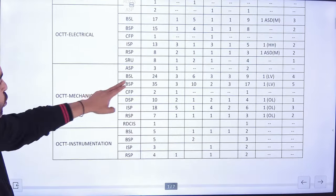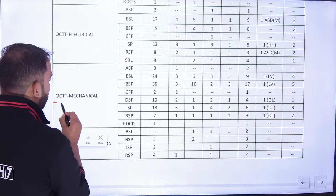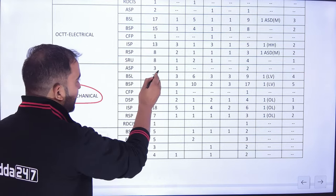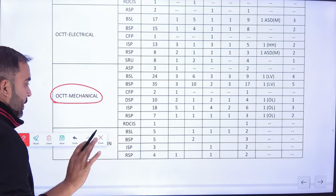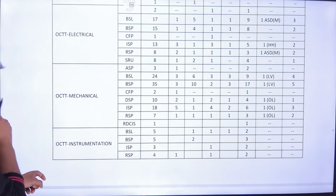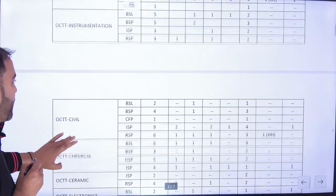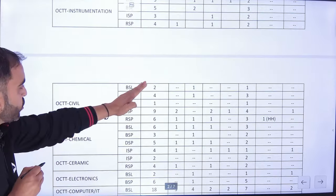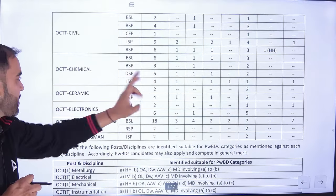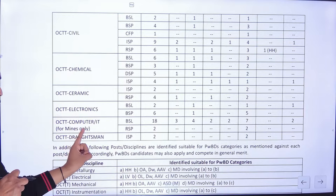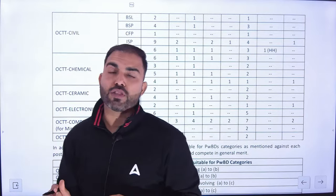Mechanical में आप लोगों को बहुत जबरदस्त vacancy देख रही है। OCTT mechanical vacancy यह आप लोग देख सकते हैं। इतनी सारी vacancy आप लोगों को दिख रही है, यह अलग-अलग plants की code है। Instruments में भी आप लोग देखिएगा, बहुत अच्छी vacancy है। Civil में थोड़ी सी vacancy है, Chemical में vacancy है, Ceramic में भी vacancy है — number of vacancy तो हमारे बहुत अच्छी है।